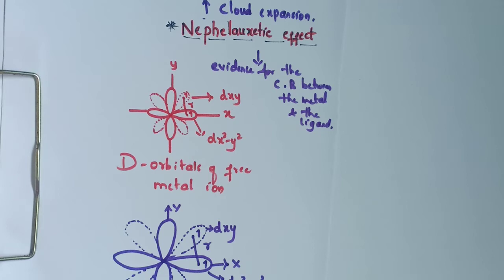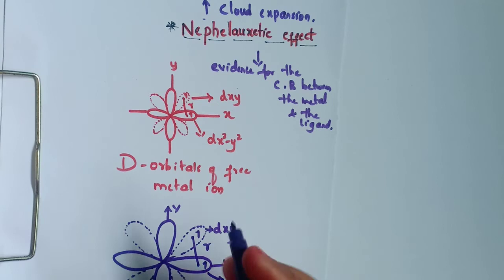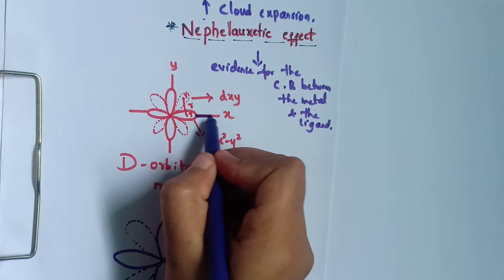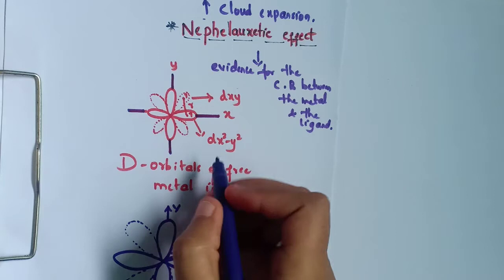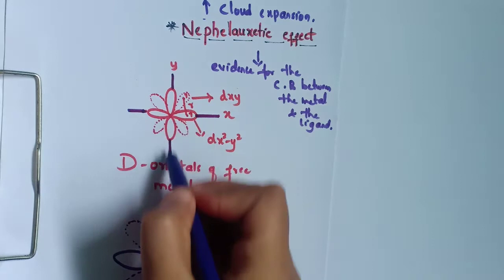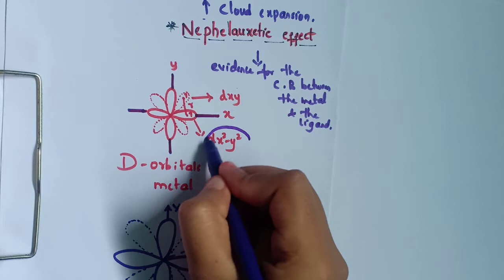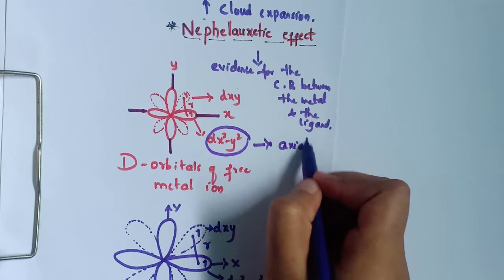Here is the d-orbital of a free metal ion. The dx²−y² orbital is oriented along the x and y axes, so these lobes are along the axis — these are called axial orbitals and belong to the eg set.